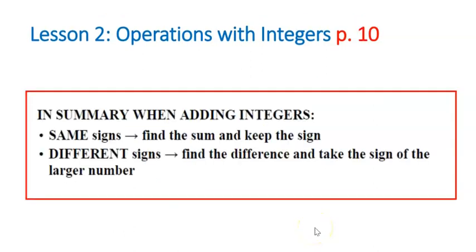So in summary, when you're adding integers, if you have the same signs, you find the sum and keep the sign. Positive plus positive is positive, negative plus negative is negative. But if the signs are different, you're going to ask yourself, which one do I have more of? If I have more positives, my answer will be positive. If I have more negatives, my answer will be negative. And then I actually subtract. I find the difference and I take the sign of the larger number.